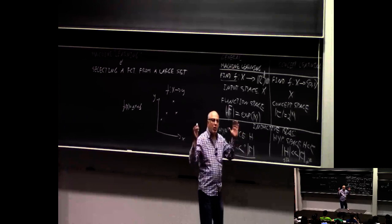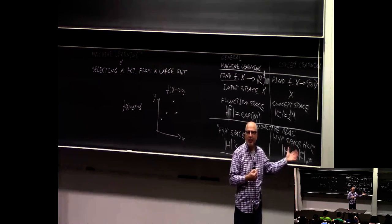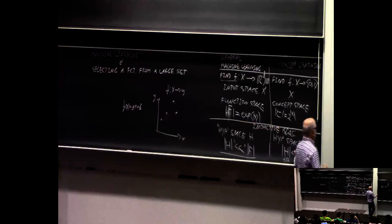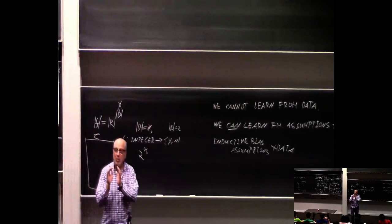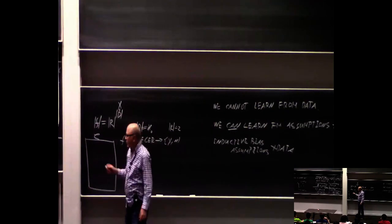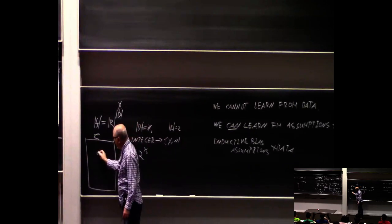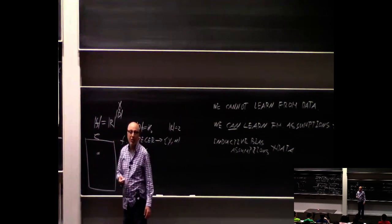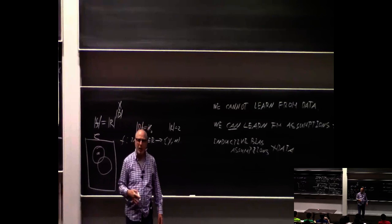The reason I start with concept learning is it's very easy to count what happens there — it's discrete and finite. We have the set of all possible functions, and we're trying to choose a hypothesis space H that is smaller. We could choose conjunctions, or disjunctions, or some other subset. We have a lot of choice in how to constrain the space.